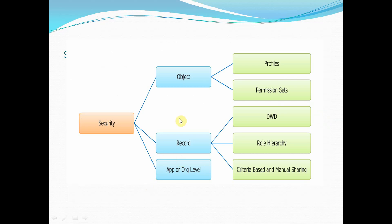In Salesforce, security operates at two levels. First is the object level — objects being standard out-of-the-box objects or custom objects you create. Profiles and permission sets control what kind of access users have to objects, whereas records created within an object are controlled by OWD and role hierarchy. There are also sharing rules and some app level and organization level security settings.